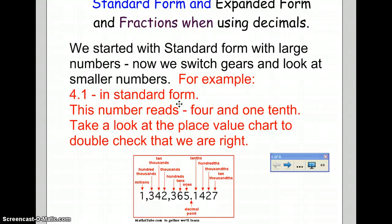This number reads 4 and 1 tenth, and you know that because in the ones column, that's where you have your 4. You put the decimal there, and the 1 falls in the tenths column. So you know it reads 4.1, and that's 4 and 1 tenth.